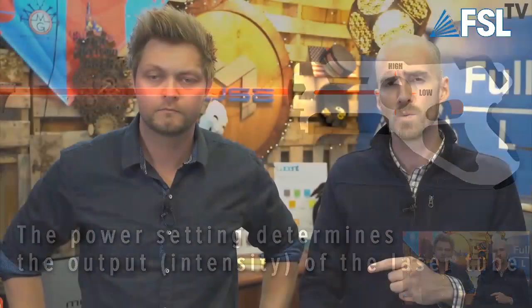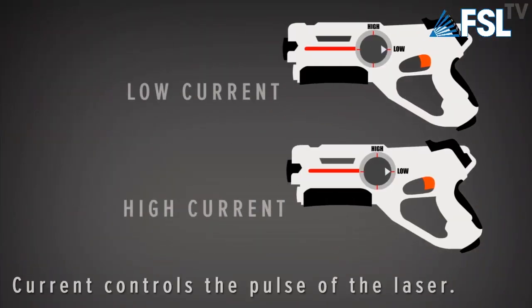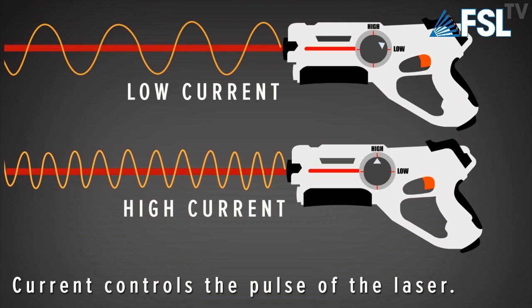As we move on to current, current is really the pulse rate of the laser — it's how many times your laser is firing as it moves across the sign. Low current means a lower pulse rate than high current, so you have more of the laser firing at your material. For a practical sense, as you're cutting, you're going to want to dial in your power and speed settings first, and then you can always fine tune with the current.